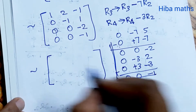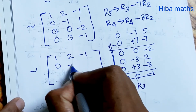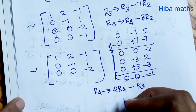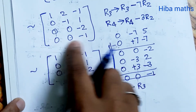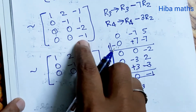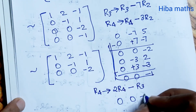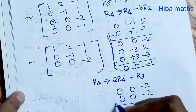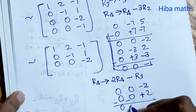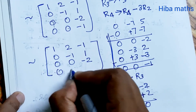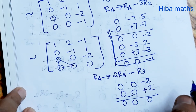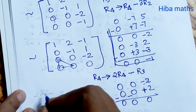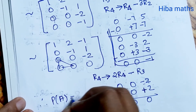First 3 rows: 1, 2, minus 1; 0, minus 1, 1; 0, 0, minus 2. Last term: 2 times R4 gives [2, 0, 0, 2; 0, 0, minus 1, 2, minus 2]. R3 is [0, 0, minus 2]. Minus minus is plus: 0, 0, minus 2 plus 2 is 0. The last row is full zero and the matrix is in row echelon form. Non-zero rows are 1, 2, 3. Therefore, rank of matrix A is equal to 3.